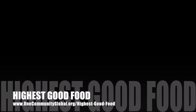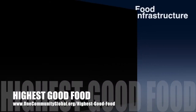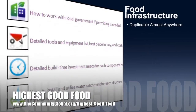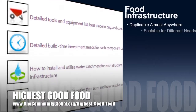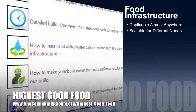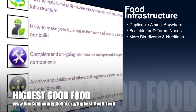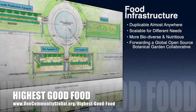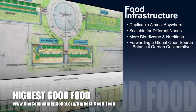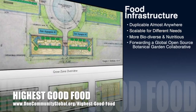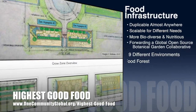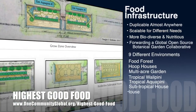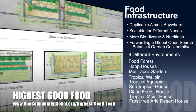One Community's approach to Highest Good Food is duplicable almost anywhere, scalable for different needs, more biodiverse and nutritious, part of forwarding a global open source botanical garden collaborative, and includes nine different free shared and duplicable growing environments.